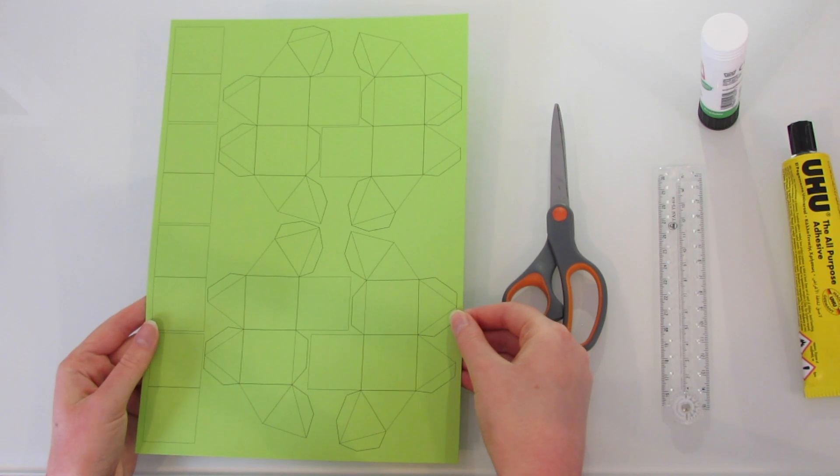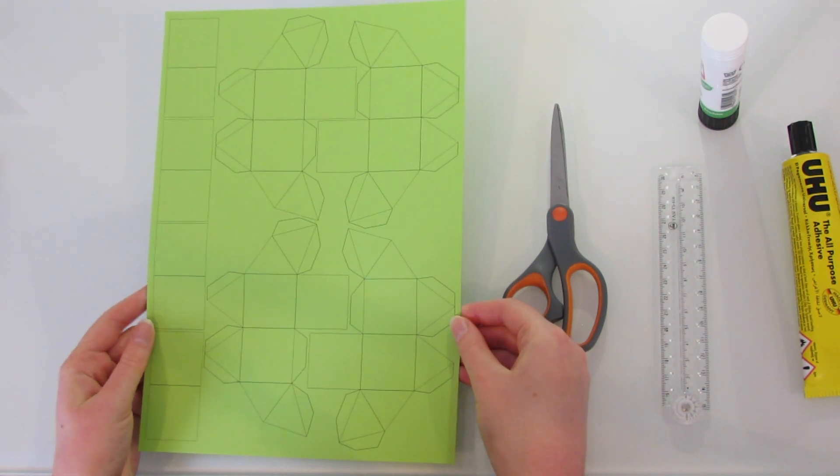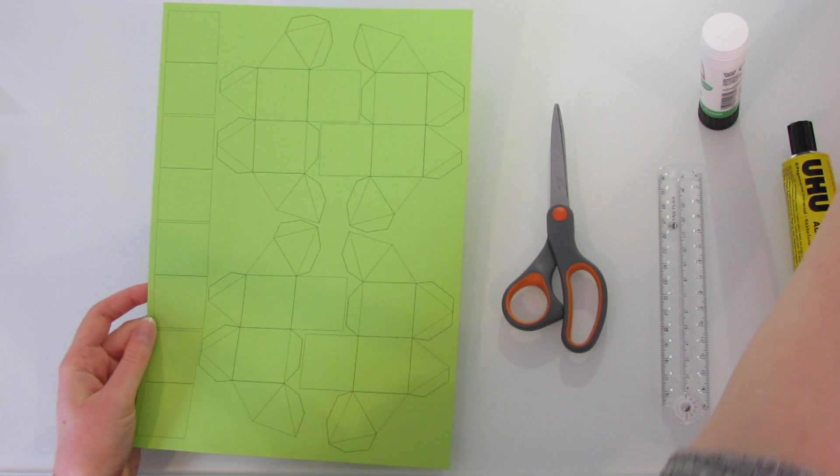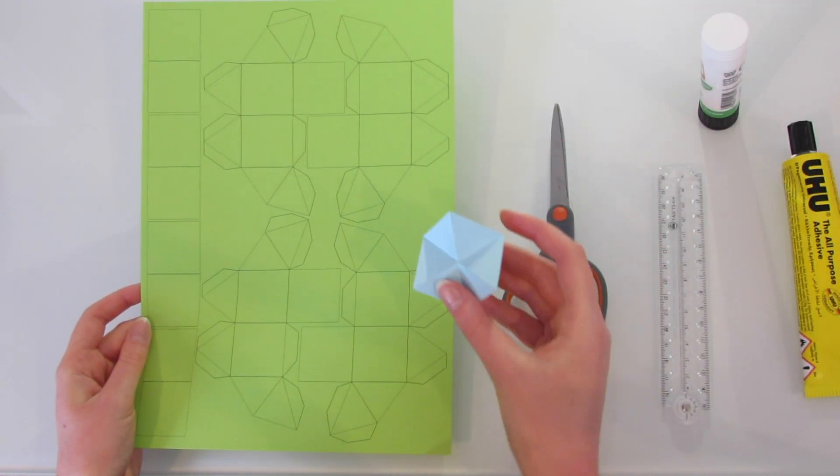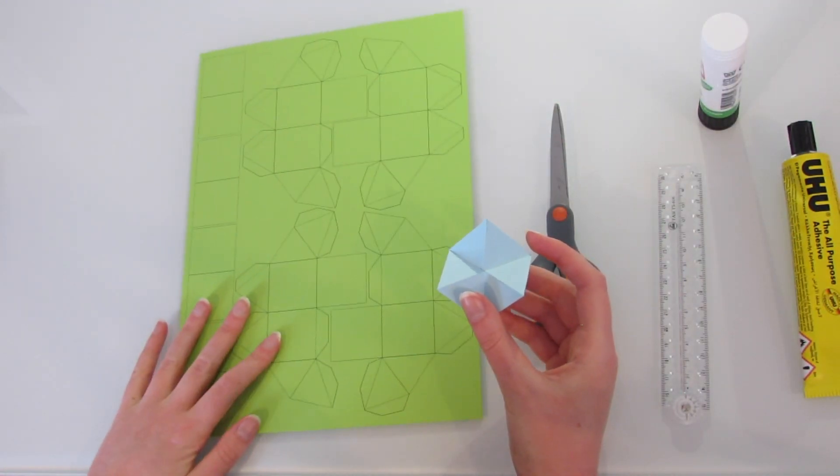OK, so let's get to making it. Here are the nets for the modules. Each Yoshimoto cube is made of eight of these modules, and so you'll need two sheets of paper, each with four nets.